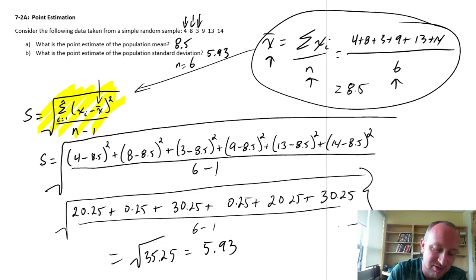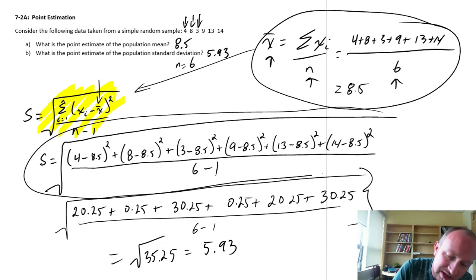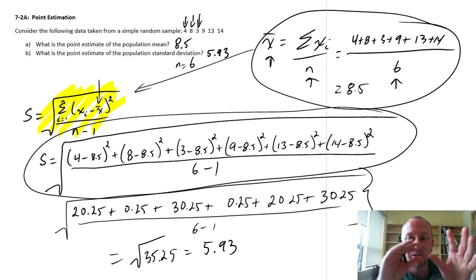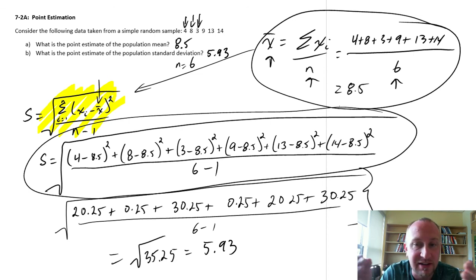Otherwise, sometimes students will try to enter this whole big thing in on their calculator, all in one big stream with a whole bunch of brackets. And then they just press enter or equals at the end. And sometimes that'll work. But you leave yourself open to error. And it would be really hard to be able to trace the error back.